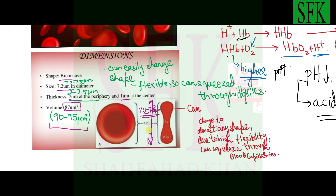Their average diameter ranges from seven point two to seven point eight micrometers, and they have an average volume of around 87 to 95 micrometer cubed — values that vary across different textbooks.